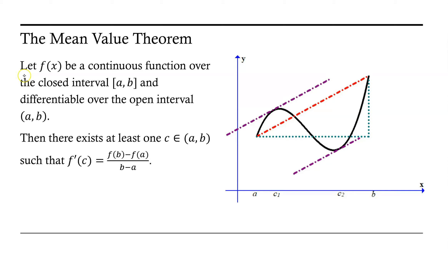The mean value theorem states: let f of x be a continuous function over the closed interval from a to b, meaning for all x values starting with a and ending with b, and differentiable over the open interval from a to b, meaning all x values between a and b, not including a and not including b.